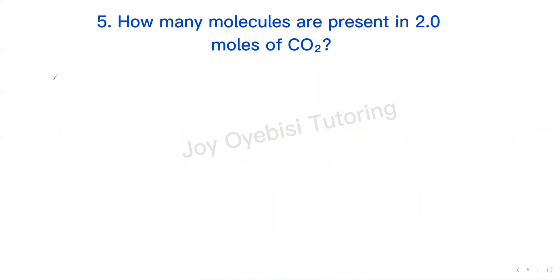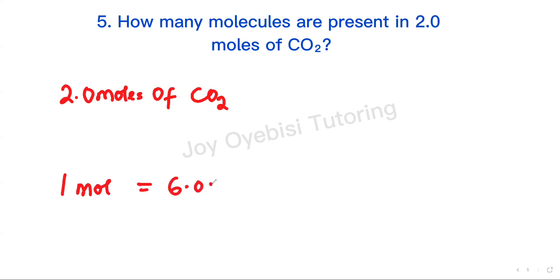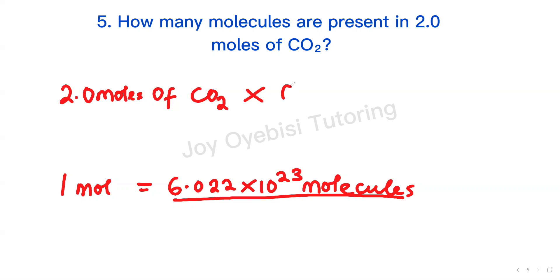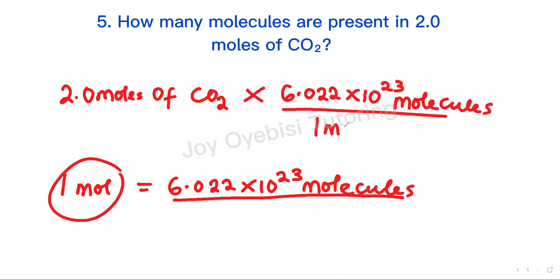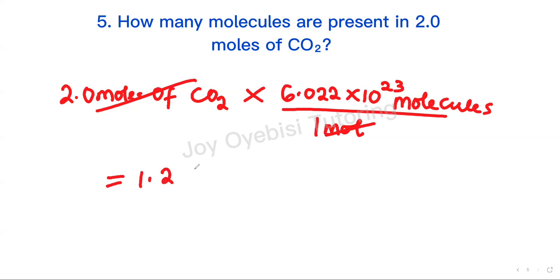Question 5: How many molecules are present in 2 moles of carbon dioxide? We start with 2 moles of CO2 and convert to molecules. According to Avogadro's number, 1 mole of a substance equals 6.022 times 10 to the 23 molecules. Since we want molecules on top, we multiply by 6.022 times 10 to the 23 molecules divided by 1 mole. The moles cancel out, and our final answer is 2 times 6.022 times 10 to the 23, which gives us 1.2044 times 10 to the 24 molecules.